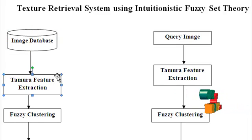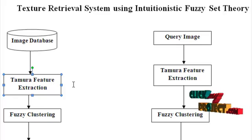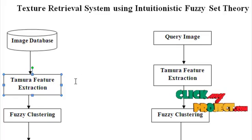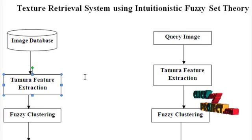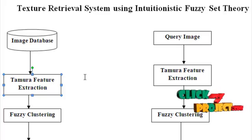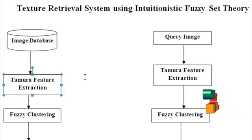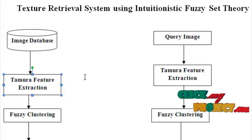The next block is Tamura feature extraction. Here we are going to extract the three Tamura features: coarseness, contrast, and directionality. After extracting these three features, they will be concatenated together and represented as a feature vector.